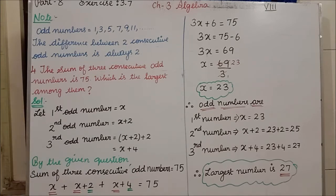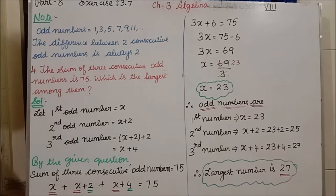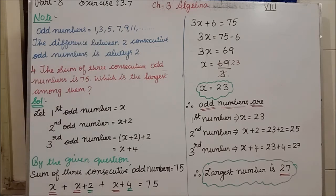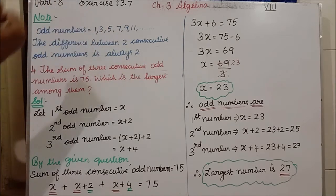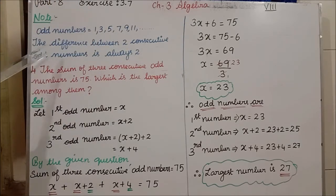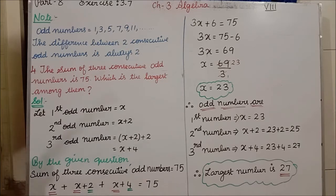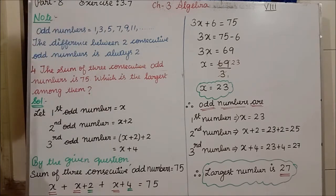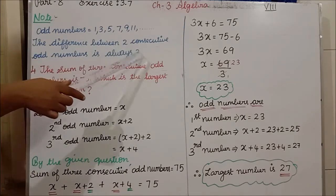If you observe odd numbers, each number increases by 2. In 1, if I add 2, I get 3. In 3, if I add 2, I get 5. Similarly, 5 plus 2 is 7. And when we subtract consecutive odd numbers: 3 minus 1 is 2, 5 minus 3 is 2, 7 minus 5 is 2. The difference between 2 consecutive odd numbers is always 2.